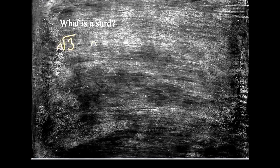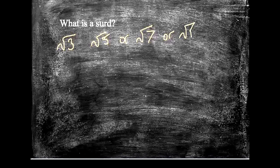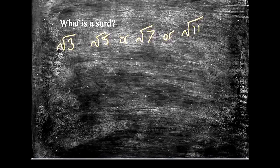Let's start off then by looking at what is a surd. A surd is a number that is written still with a square root in it, so something like root 3, or root 5, or root 7, or root 11 — all these are surds. The reason that we write them like this and leave them like this is in terms of accuracy. If on your calculator you were to type in the square root of 3, you will get a very very long decimal number, and in fact it's a decimal number that never terminates, it just keeps going on and on and on.